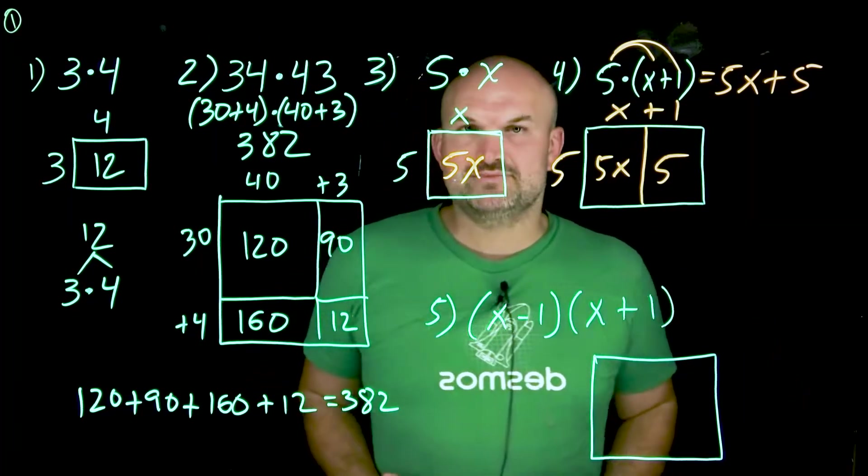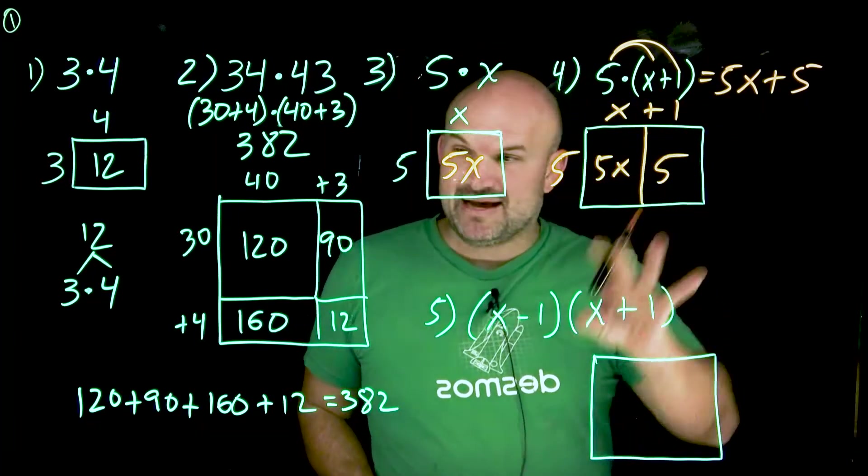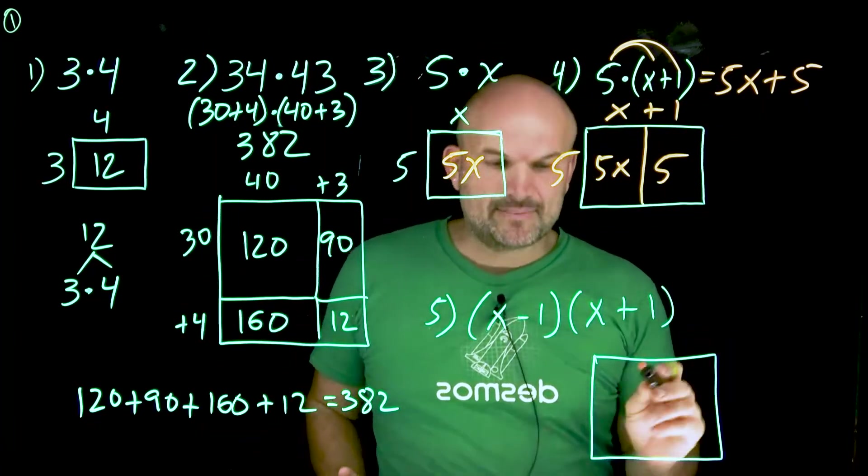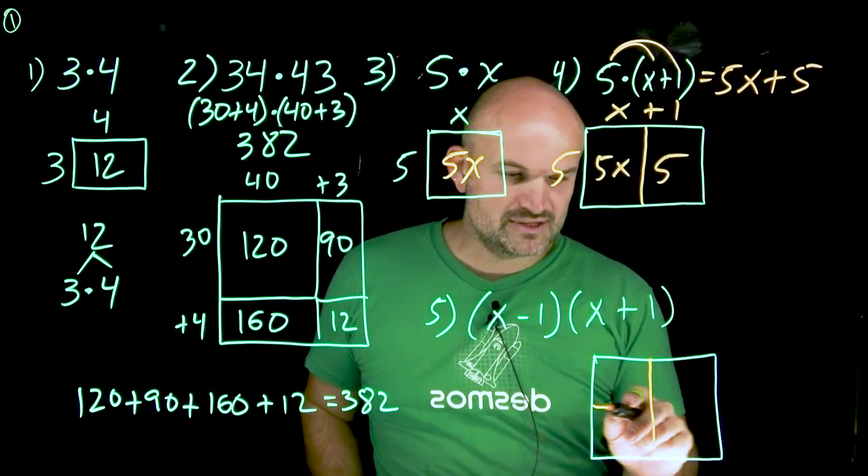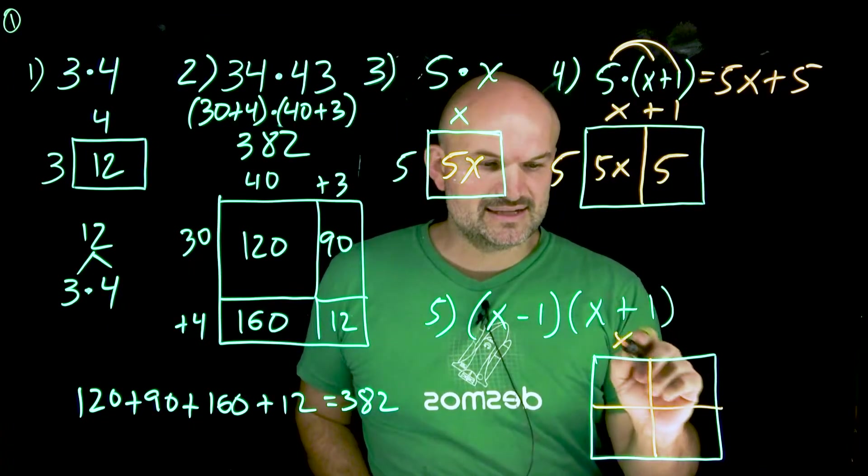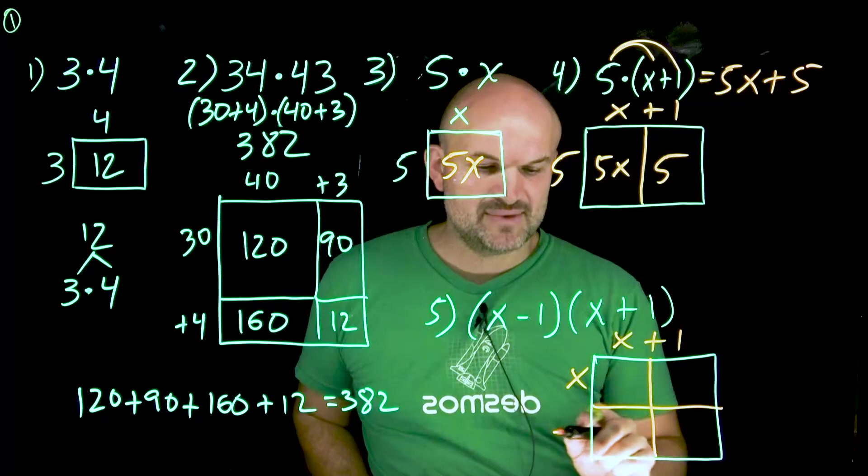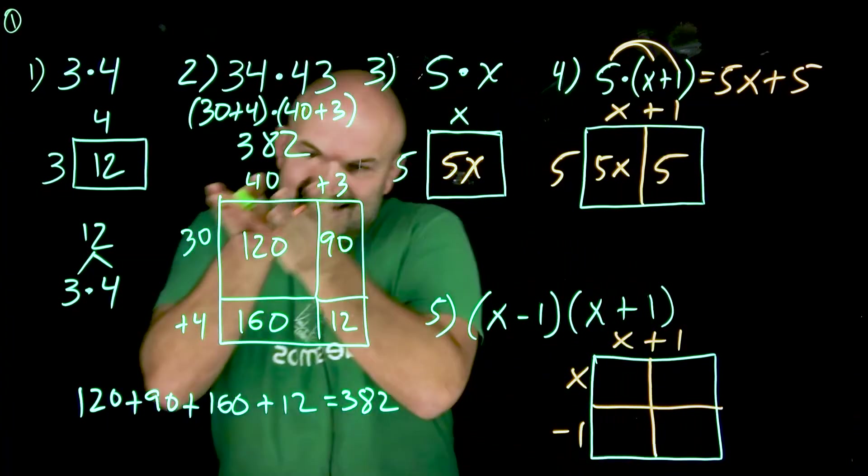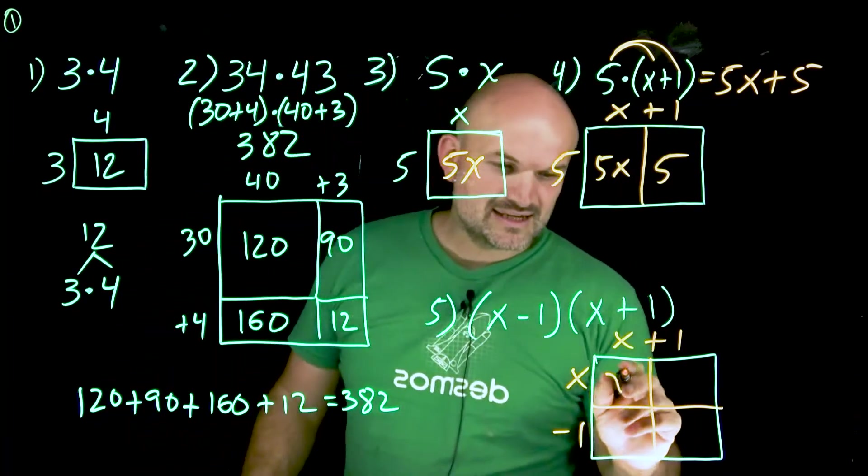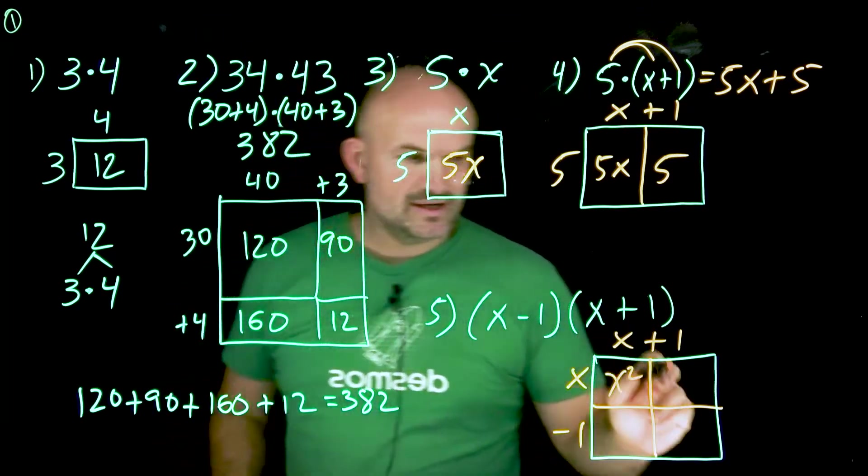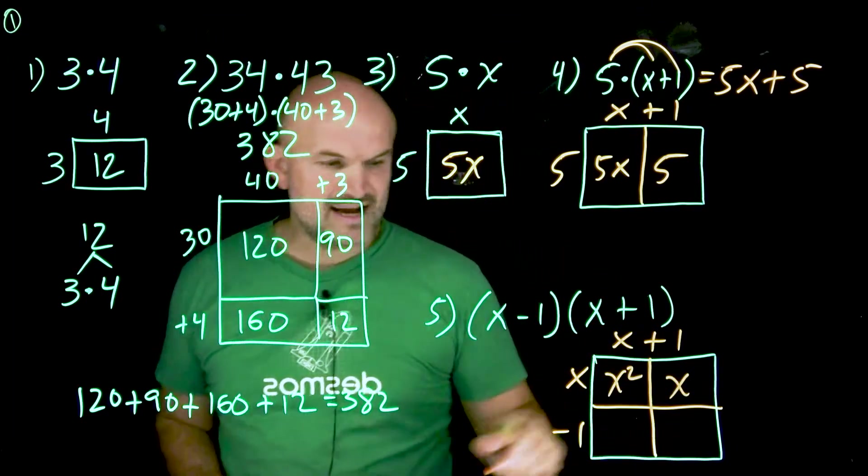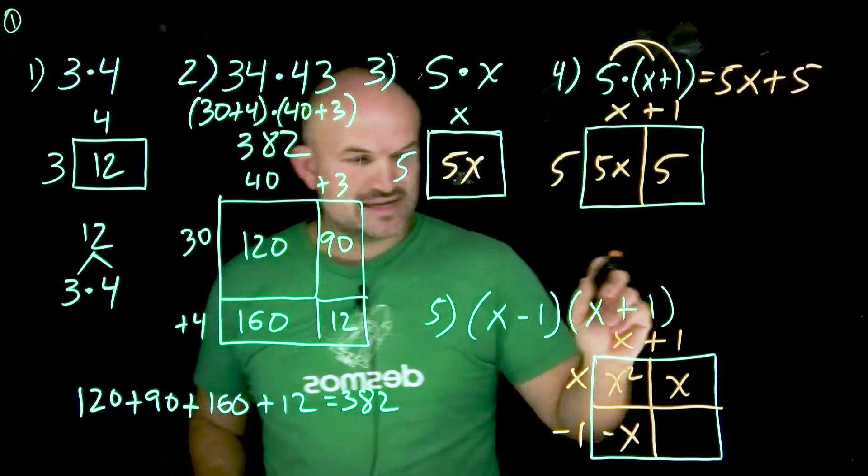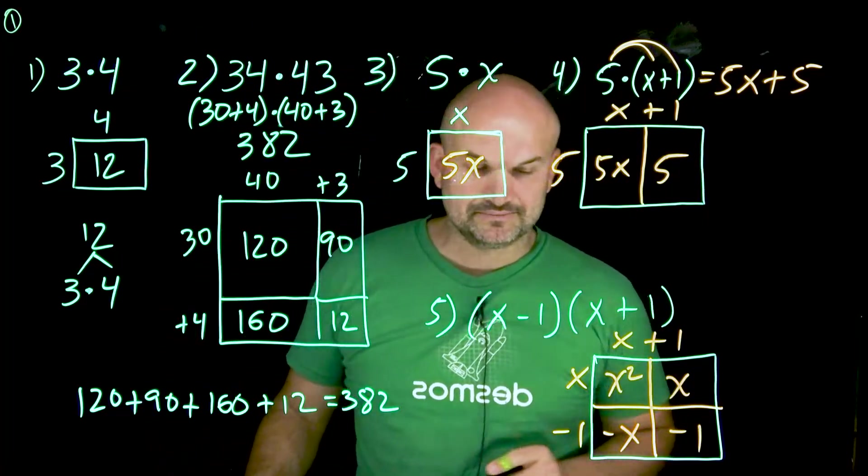Now, what about an X minus one times X plus one? And again, I'm going to use the same method for these two to represent this. What I'm simply going to do is break this up into four quarters. I'll just use one as X plus one on top and X minus one on the bottom. And again, using the idea that I did over here, X times X is going to be X squared. X times one is going to be X. X times negative one is going to be negative X. And negative one times one is going to be negative one.